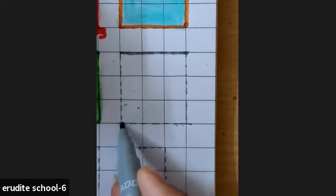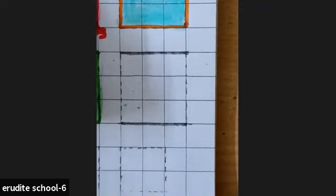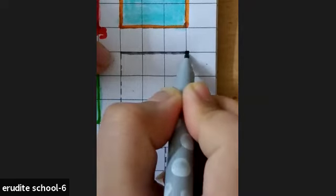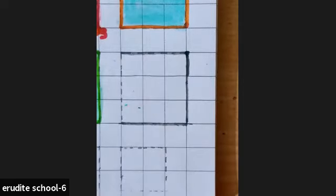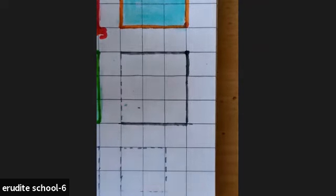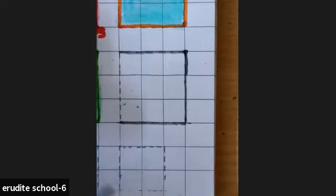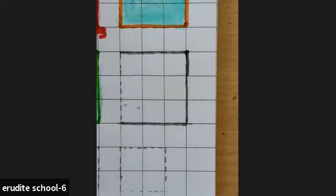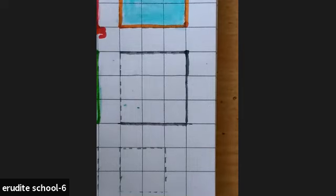These are the dots and we join the dots. These are the dots and we join the dots. You also join in your book - square shape, everyone. Yes, Vedanshi - very good! Yes, Inaya - very good! Hinaya - very good!